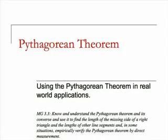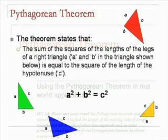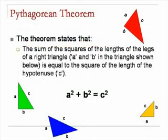The Pythagorean Theorem states that the sum of the squares of the lengths of the legs of a right triangle, which are A and B in the triangles shown, is equal to the square of the length of the hypotenuse, which is C.